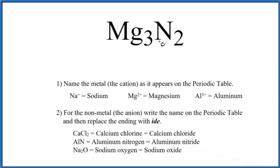To write the name for Mg3N2, we first need to recognize that we have an ionic compound here. That's because we have a metal and a non-metal bonded together.